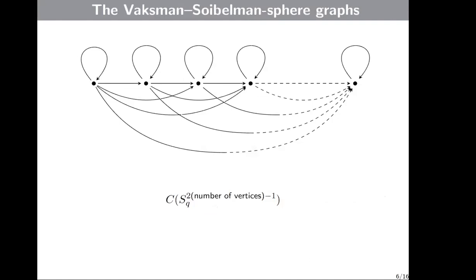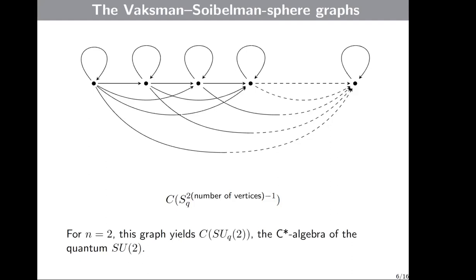Now I will present a few examples of graphs. The first example is the graph of the Woronowicz-Soibelman quantum sphere. What Woronowicz did was take SU_q(N+1) divided by the action of the compact quantum subgroup SU_q(N), obtaining the set of fixed points of the C*-algebra — that is, the C*-algebra of the quantum sphere. A very important example in compact quantum group theory and non-commutative topology is when N equals 2, and for this his graph yields continuous functions on SU_q(2).